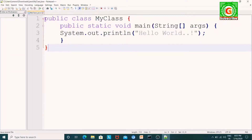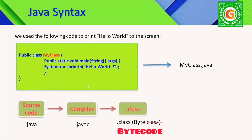We can write each and every line of code. Each and every line of code that runs in Java must be inside a class. If we write the program in a class, we can write statements inside it. After we write the source code, we can save the file with a .java extension. We can use the compiler and compile it with the javac command, which will generate a .class file. That file contains bytecode — bytecode means binary coding, 0s and 1s format.